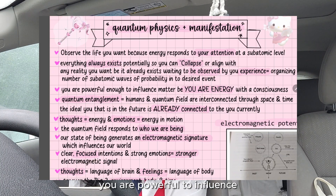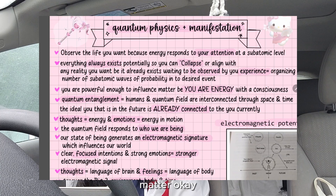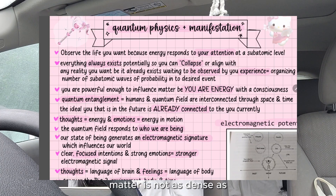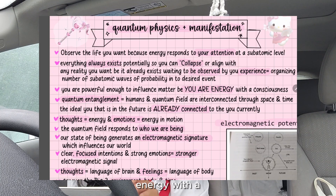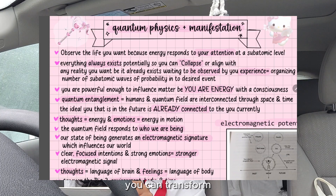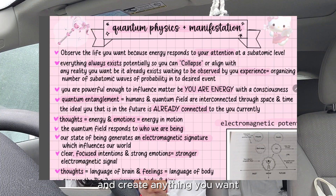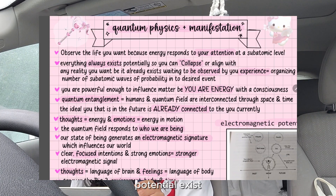An experience is essentially defined as organizing a vast number of subatomic waves of probability toward a desired event. So many different types of coherent waves are creating and increasing the chance of the probability of your desired event occurring. Therefore, you are powerful to influence matter. Matter is not as dense as you think it is because you are energy with a consciousness — so you can transform and create anything you want, because any potential exists.